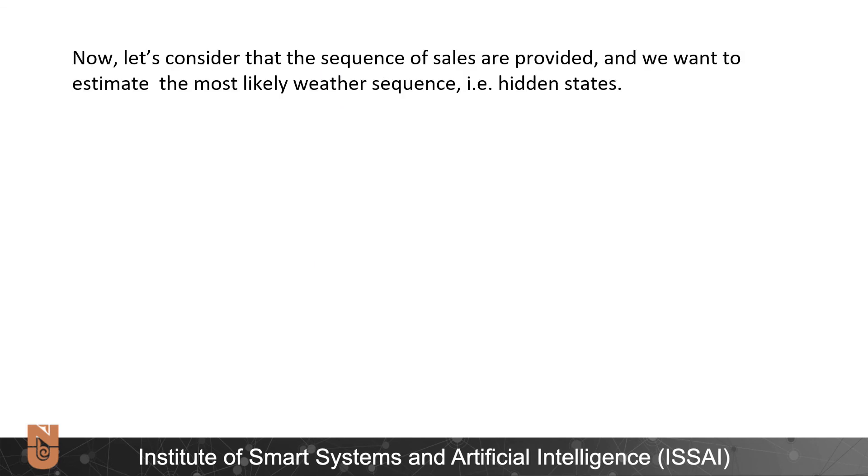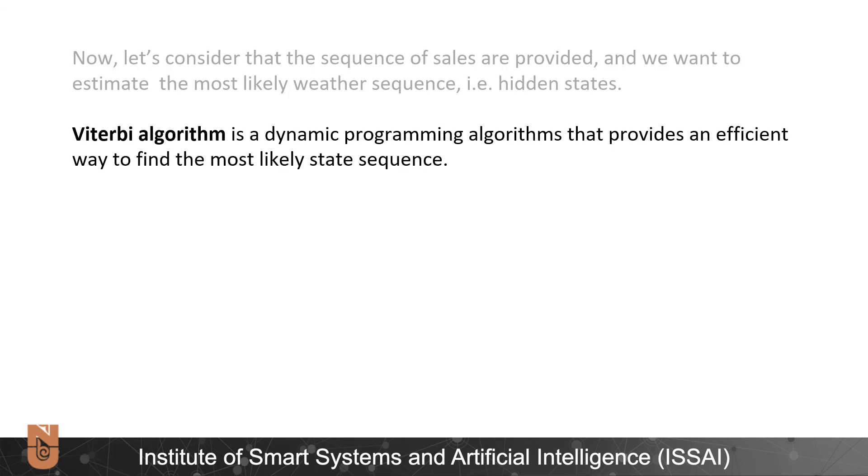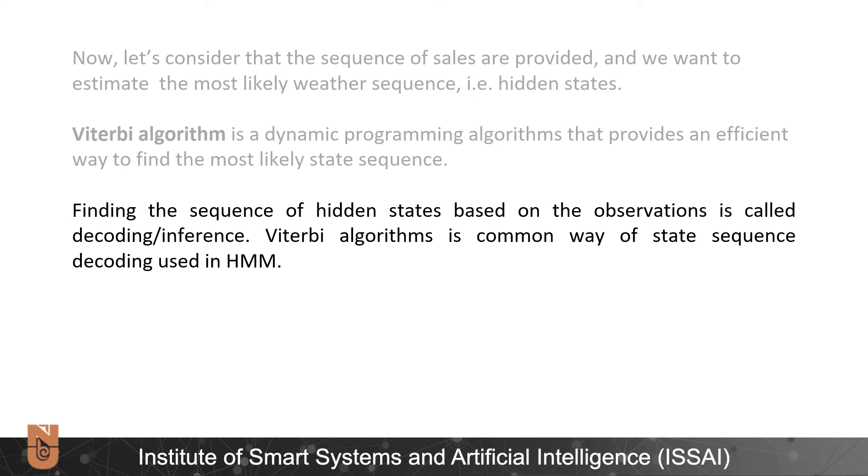Now let's consider that we are given a sequence of the sales preferences and we want to estimate the most likely weather sequence, sequence of hidden states. In this case we'll use Viterbi algorithm. Viterbi algorithm is a dynamic programming algorithm that provides an efficient way to find the most likely state sequence. Finding the sequence of the hidden states based on the observations is called decoding. Viterbi algorithm is a common way of state sequence decoding used in HMM.